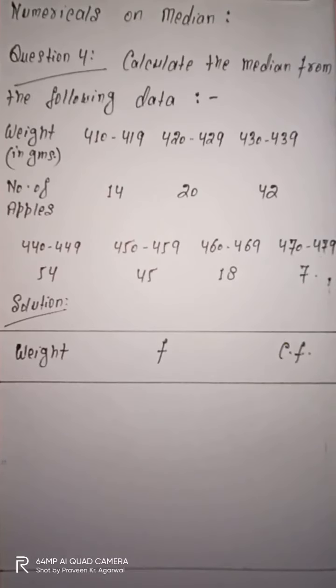And the number of apples for each particular class are: 14, 20, 42, 54, 45, 18, and 7.